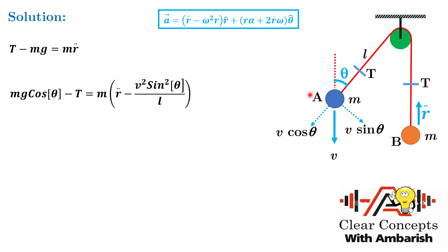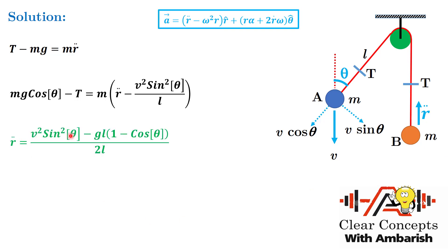For bob A in the radial direction, the force is mg cos theta minus T, and this equals m times (r double dot minus omega squared r). Here omega squared r can be written as v squared sin squared theta divided by l. So: mg cos theta minus T = m times (r double dot minus v squared sin squared theta / l). With two equations and two unknowns (T and r double dot), solving gives: r double dot = (v squared sin squared theta minus gl(1 minus cos theta)) / (2l).